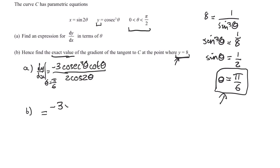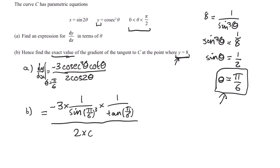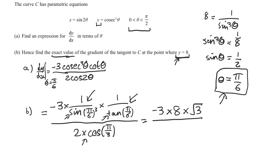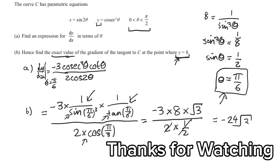Now we plug θ equals π/6 into dy/dx. To get the exact value, we calculate step by step rather than all at once on the calculator. We have minus 3 times cosec cubed(π/6) — writing cosec as 1 over sine, this term equals 8. Then multiplied by cot(π/6) — writing cot as 1 over tan — this term equals root 3. All divided by 2 cos(2 × π/6) equals 2 cos(π/3) equals 2 times a half equals 1. So these cancel, and our final answer is minus 24 root 3.